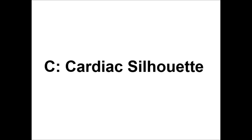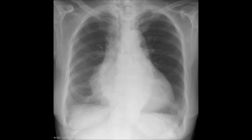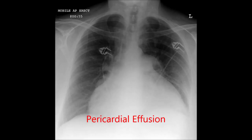C is the cardiac silhouette. On a PA film, the heart should be less than half of the chest width. An enlarged cardiac silhouette is most commonly caused by cardiomegaly. Pericardial effusion is another important cause.